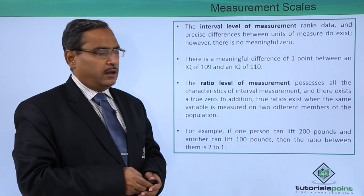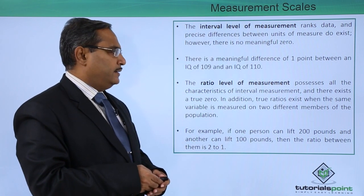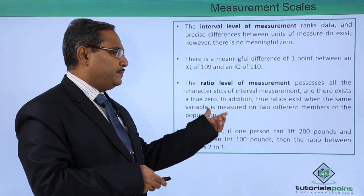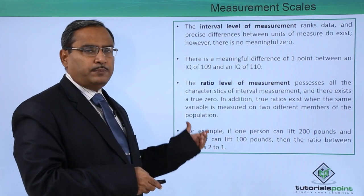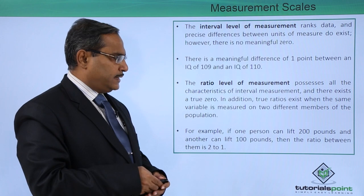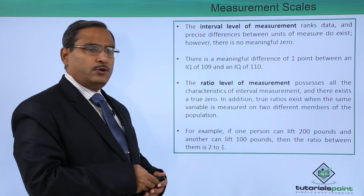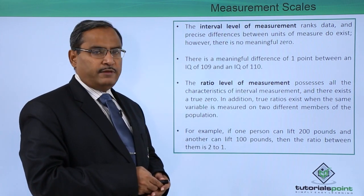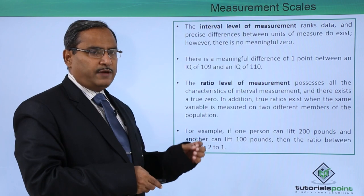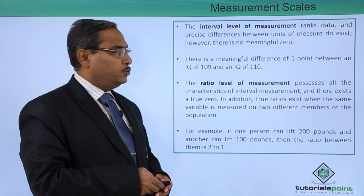The next one is our ratio level of measurement. It possesses all the characteristics of interval measurement and there exists a true zero, and in addition true ratios exist when the same variable is measured on two different members of the population. For example, if one person can lift 200 pounds and another can lift 100 pounds, then the ratio between them will be 2 is to 1. So in ratio level of measurement, we calculate two different measure values from two different members of the population and calculate the respective ratio of those values.